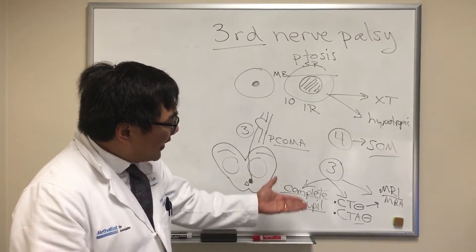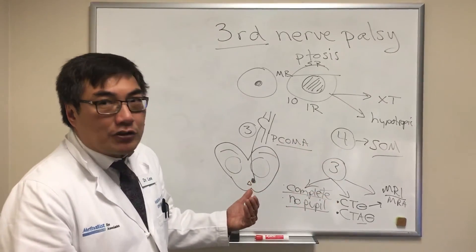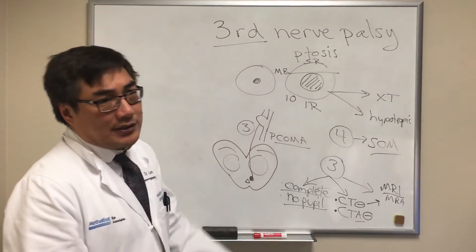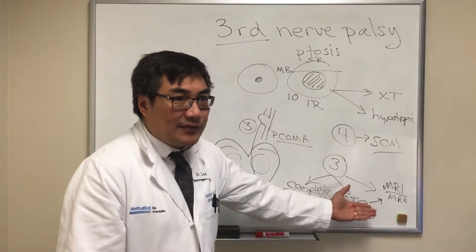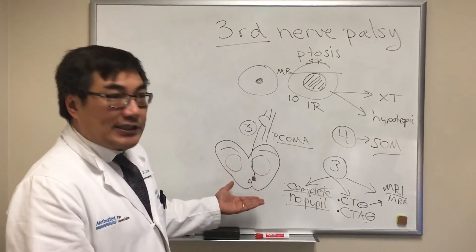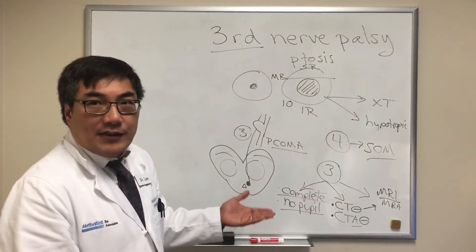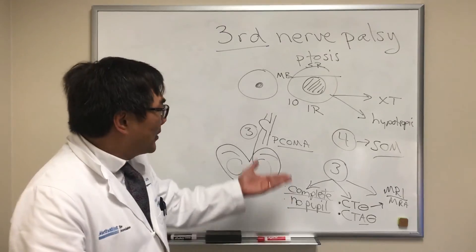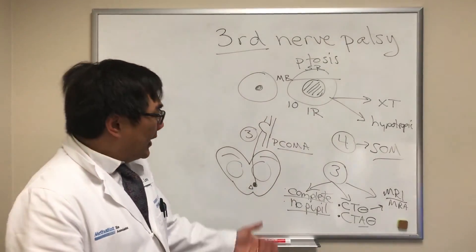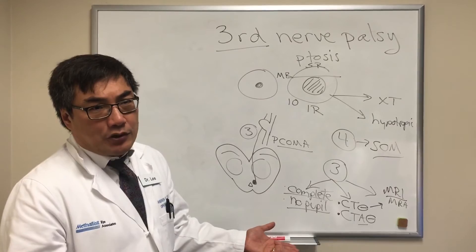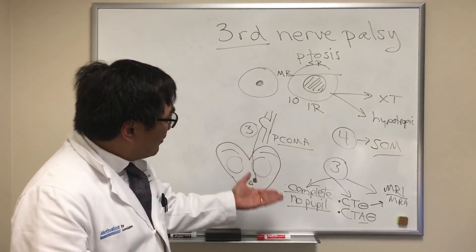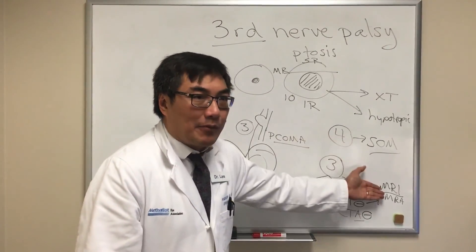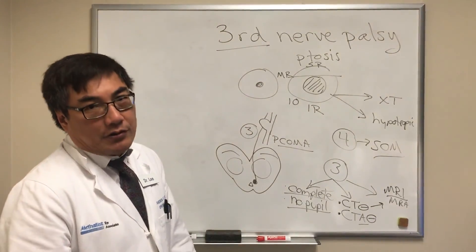So CT and CTA followed by MRI and MRA is our procedure of choice for the evaluation of third nerve palsy to make sure it's not an aneurysm. If everything is negative, we look for the usual suspects: ischemia is the number one cause in vasculopathic patients; giant cell arteritis must be considered in every elderly patient with new-onset diplopia; and infectious and inflammatory etiologies should be tested. But the main point is ruling out aneurysm with CT, CTA, MRI, and MRA.